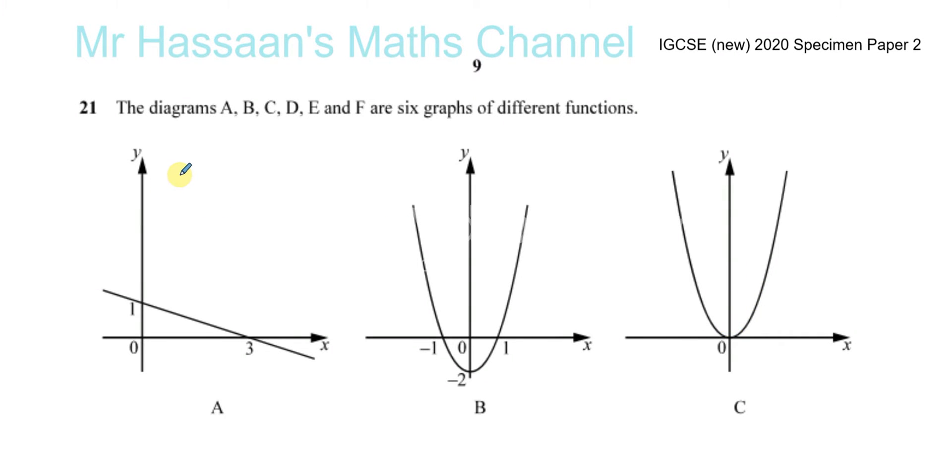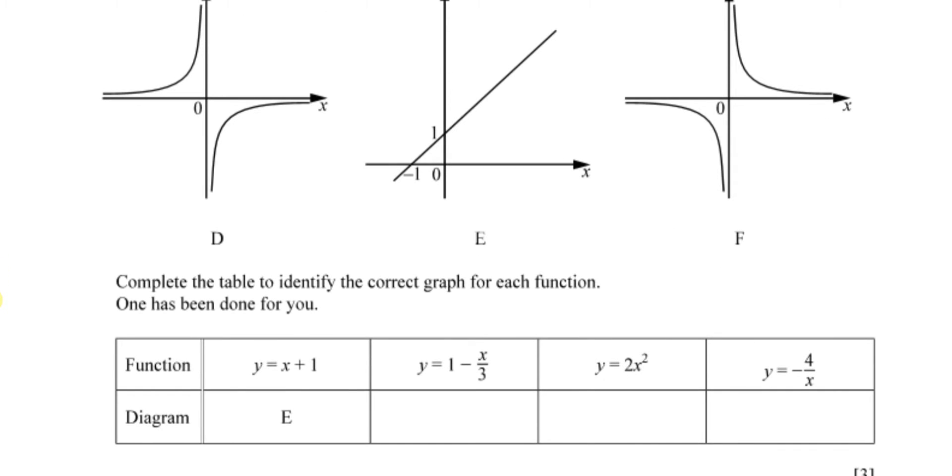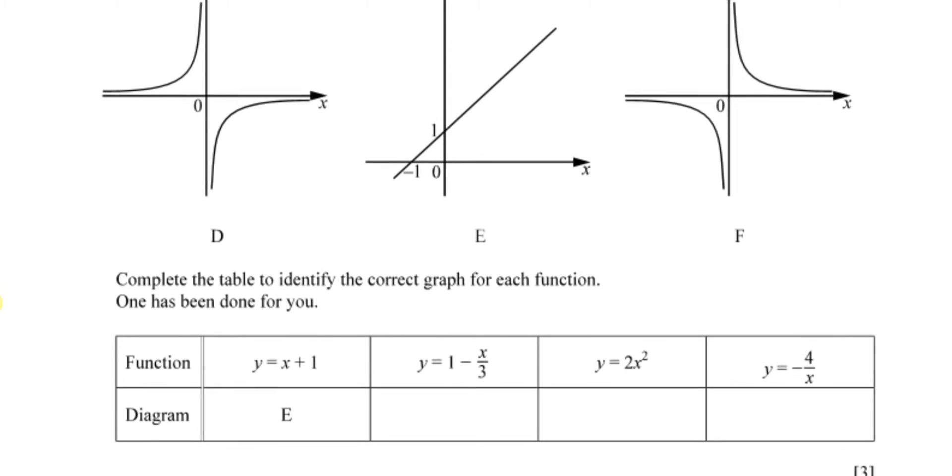Now for question number 21, it says the diagrams A, B, C, D, E, and F are six graphs of different functions. Complete the table to identify the correct graph for each function. One has been done for you.